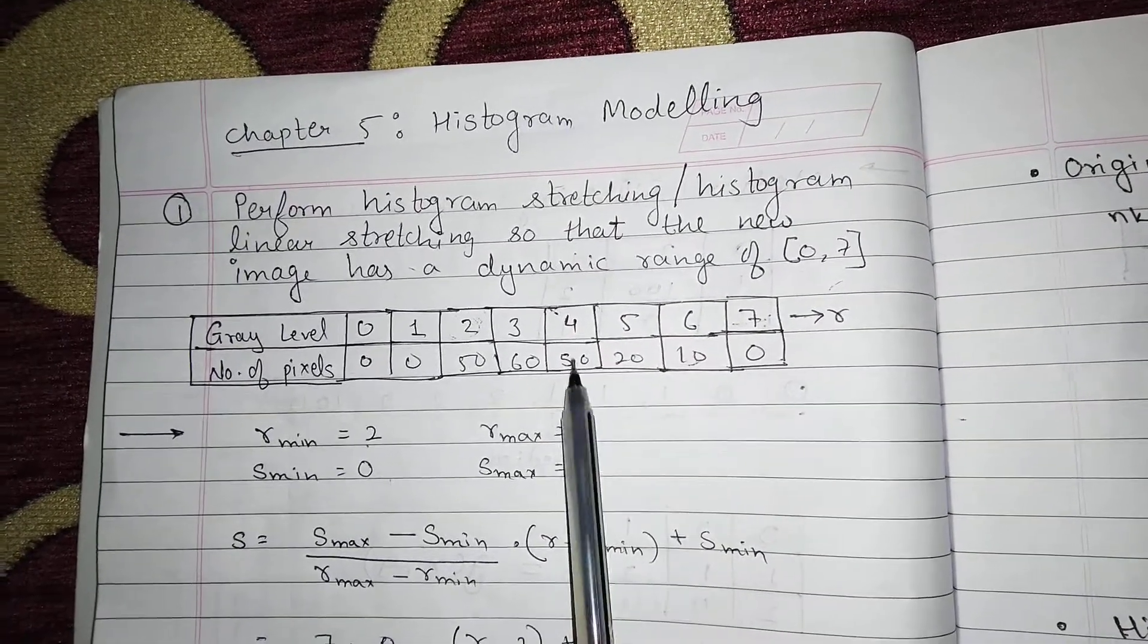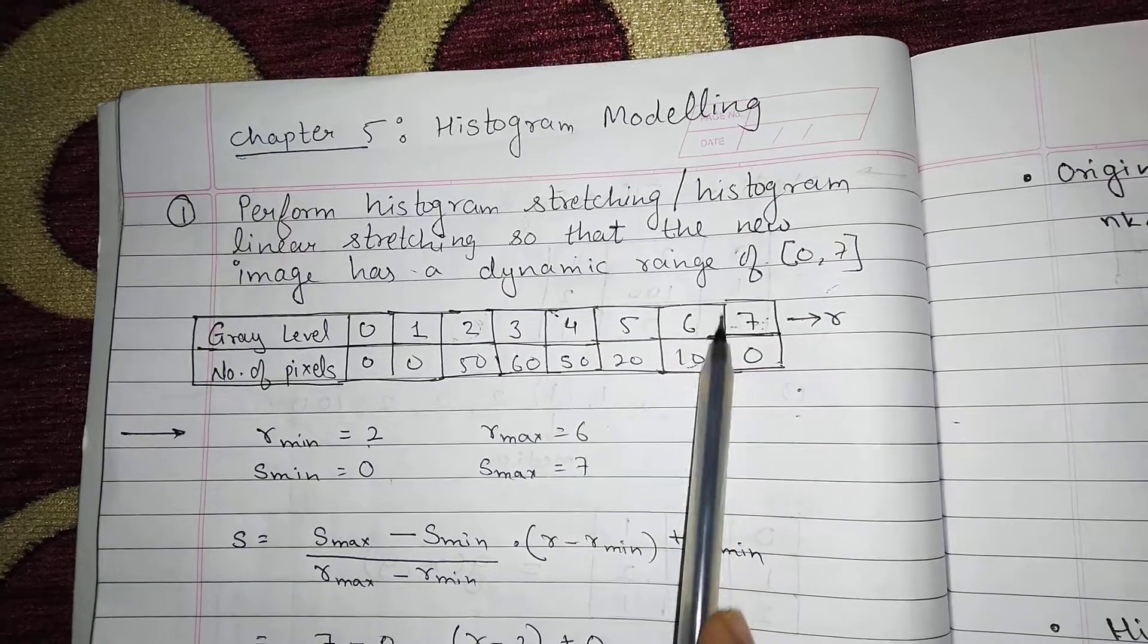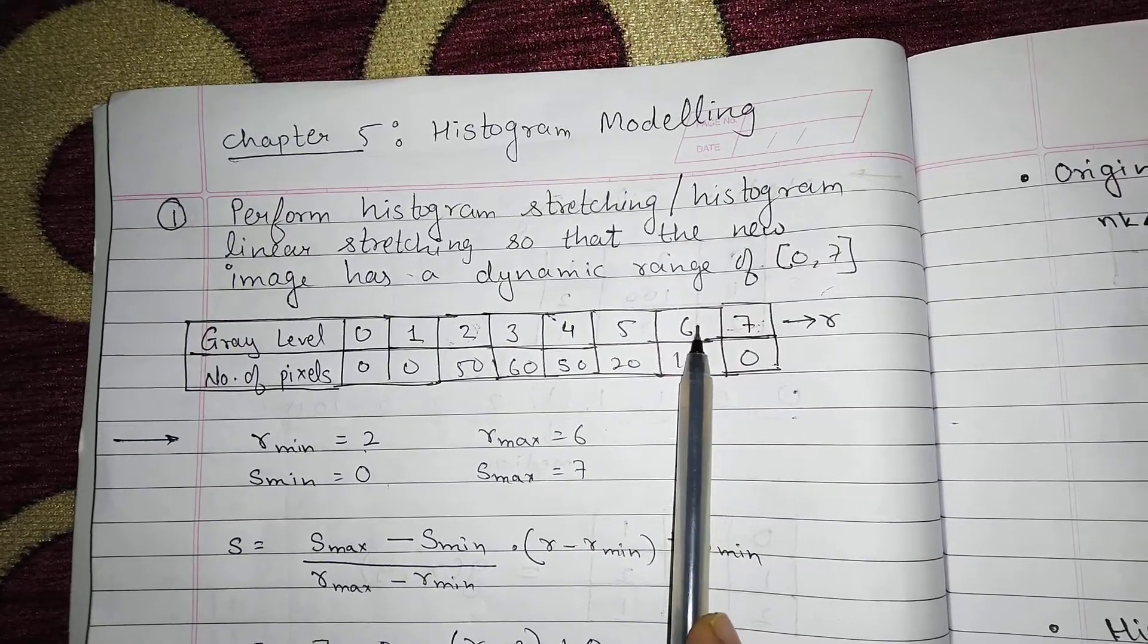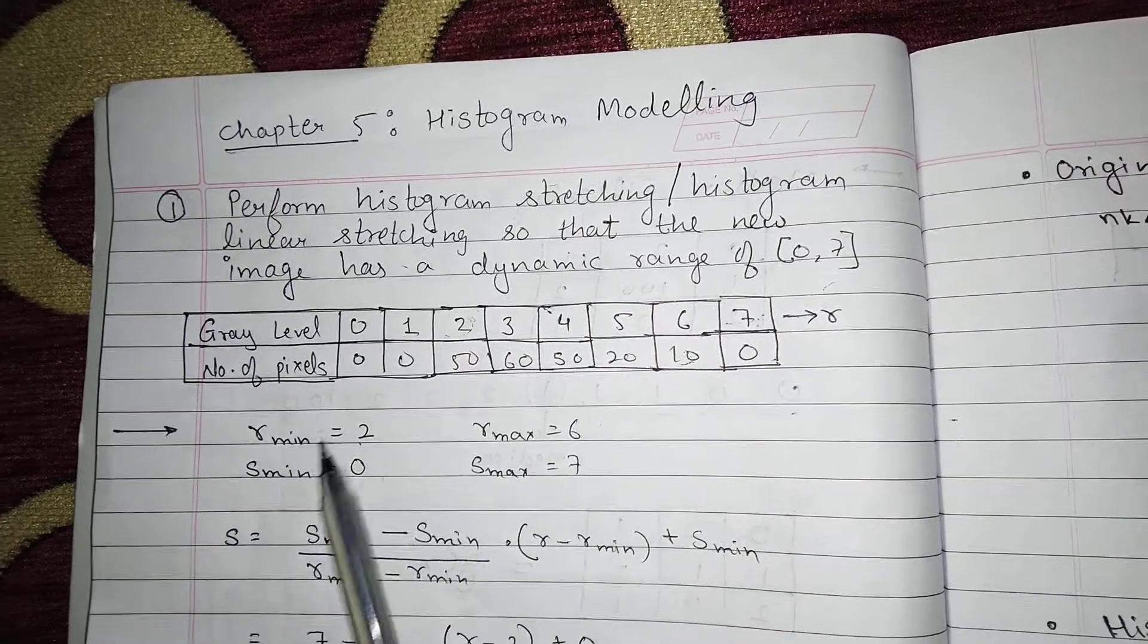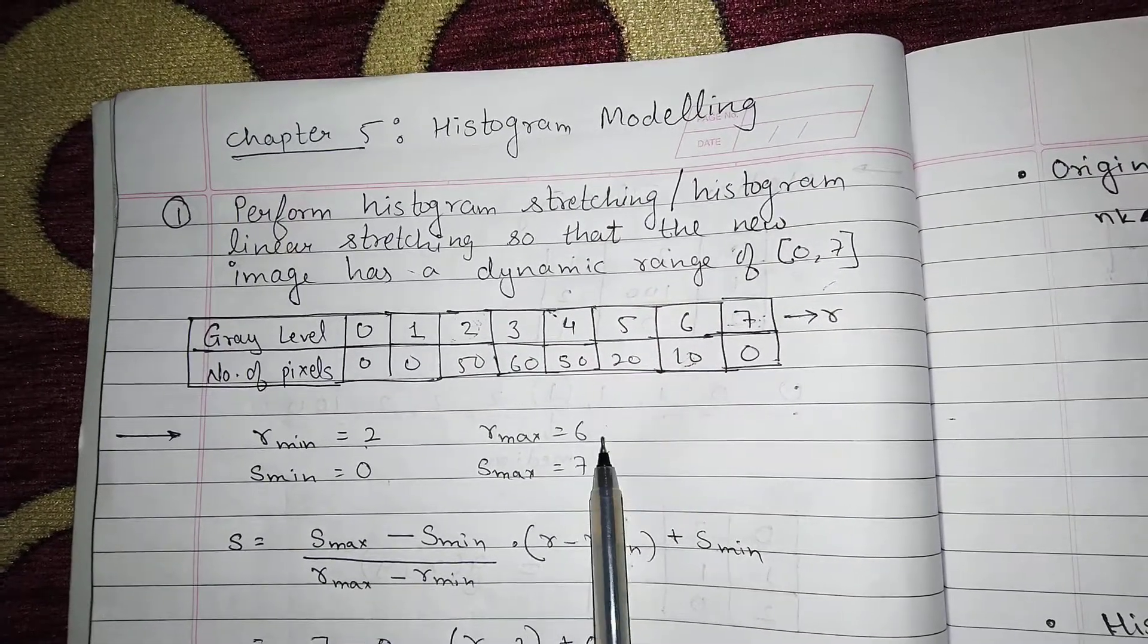Even if we had a 0 in between it would still be R max will still be 6 because after that there is a constant 0. So I have R min 2, R max 6.